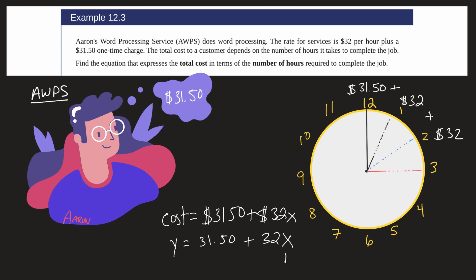So he could charge 31.50 plus 32 times say 2.4 hours to get his total. So here's the final equation that expresses the total cost in terms of the number of hours required to complete the job.